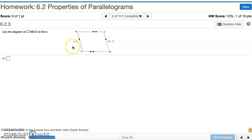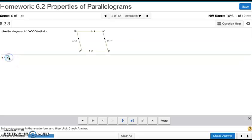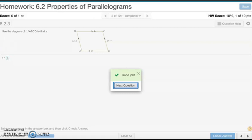In a parallelogram, opposite sides are congruent. So we would have to set these two measures equal to each other to find x. So we set x plus 3 equal to 2x minus 4. Subtract x from both sides and add 4 to both sides. We get x equals 7. And that's number 2.